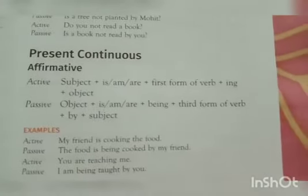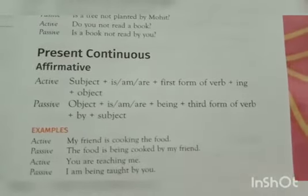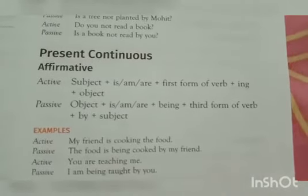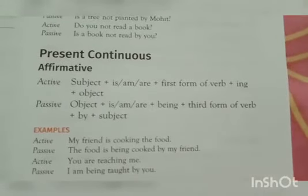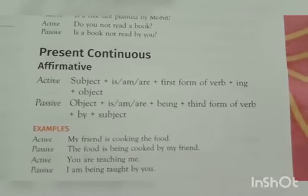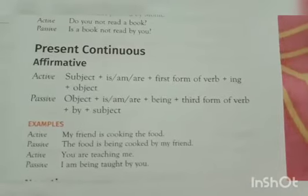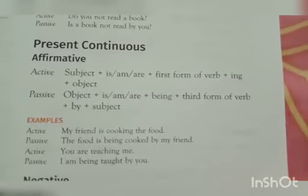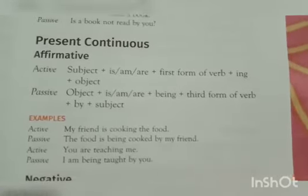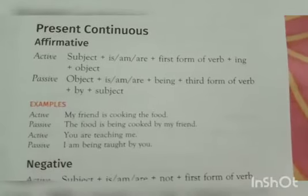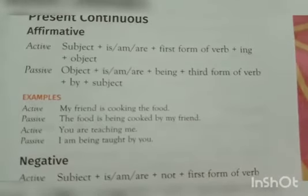For the present continuous affirmative active form, the structure is: subject plus is/am/are, plus the first form of verb plus -ing, plus object. As we know, in continuous form the verb comes in the -ing form. When it comes to passive, the object plus is/am/are plus 'being' is added before the third form of the verb, followed by 'by' and the subject. For example: 'My friend is cooking the food' becomes 'The food is being cooked by my friend.'